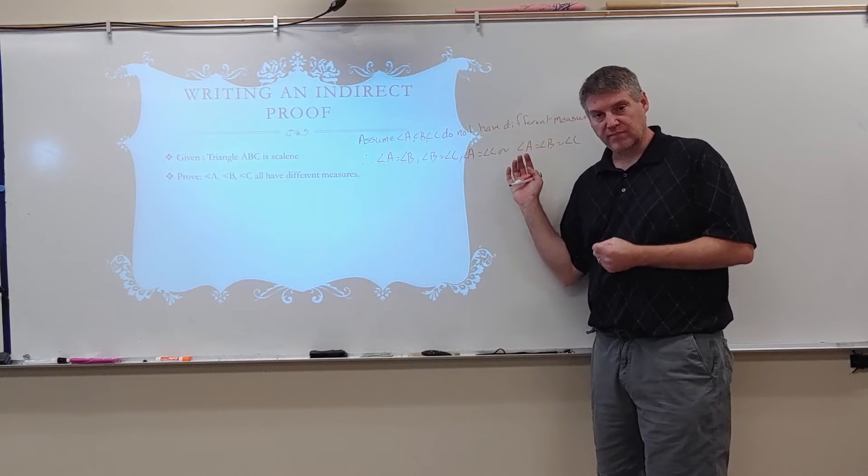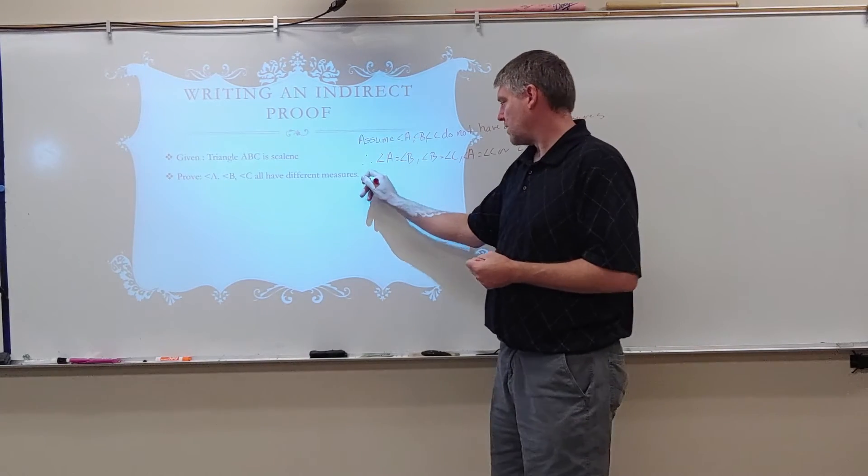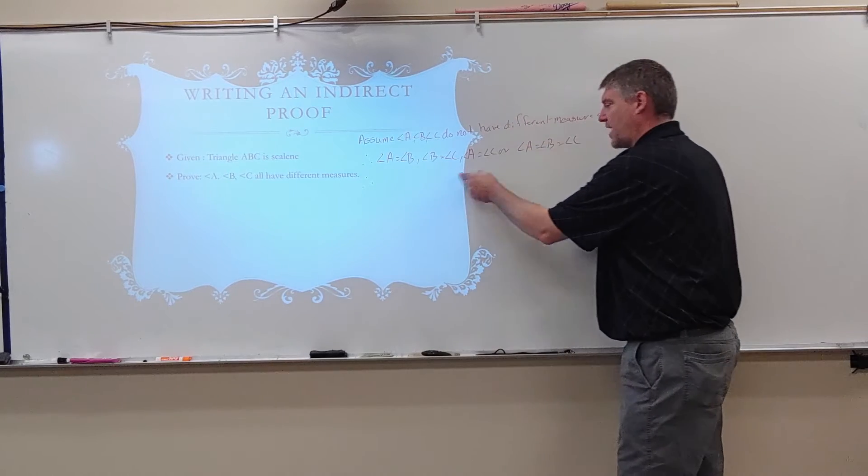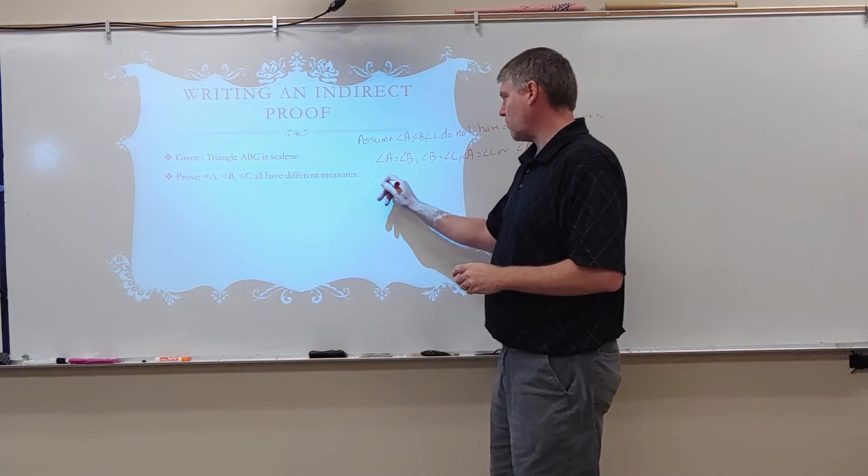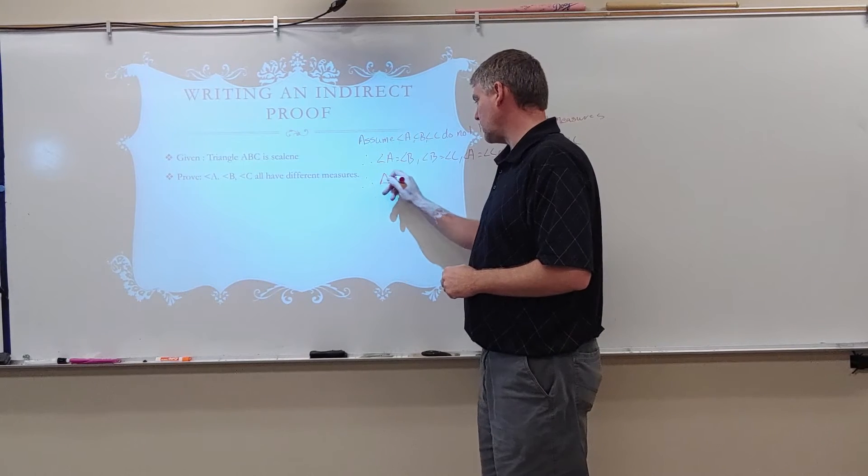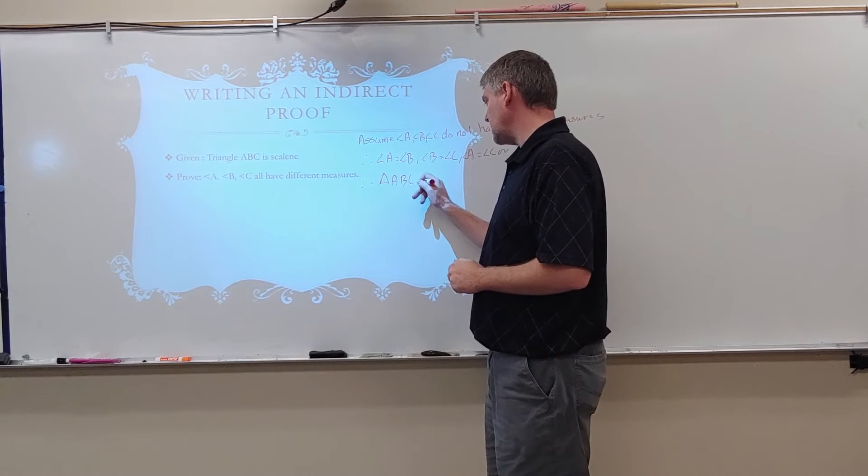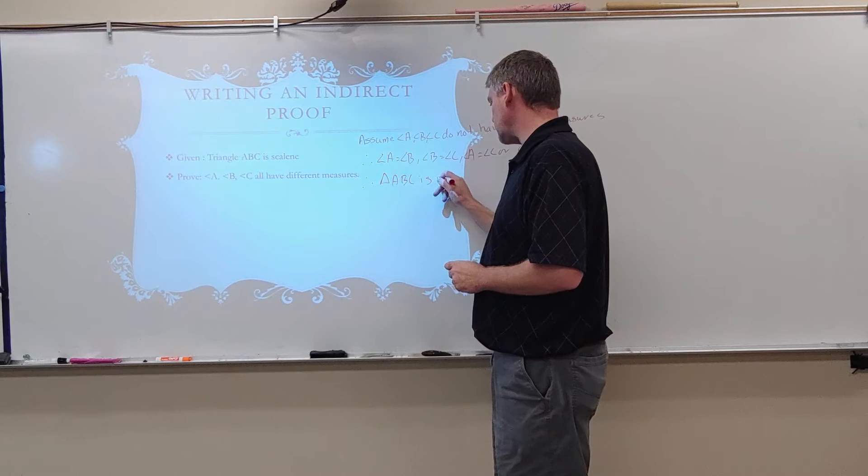Or they all could be equal. Well, therefore, what happens if at least two of the angles are equal? Therefore, triangle ABC is isosceles.